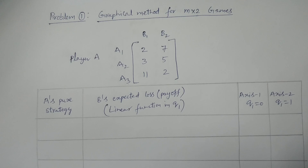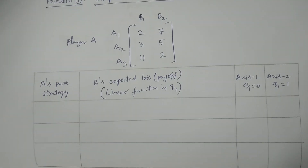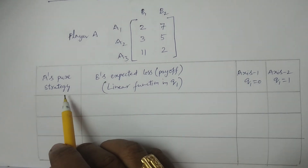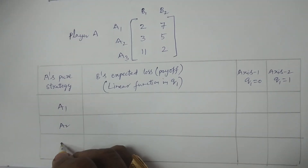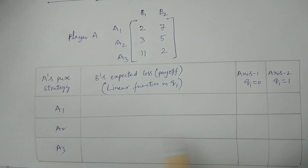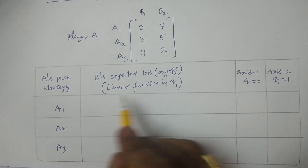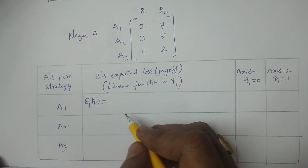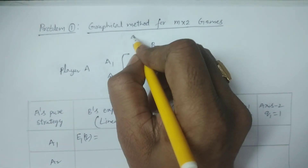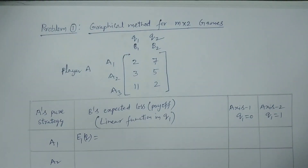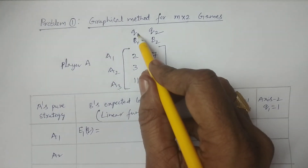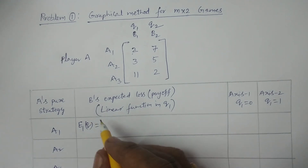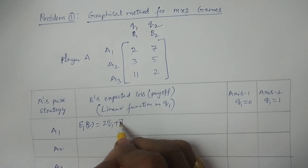In the graphical method, the first step is to prepare this particular table. We consider A's pure strategies A1, A2, and A3 — three strategies — and calculate B's expected loss as a linear function in q1. For strategy A1, B's expected loss E1(q) equals 2q1 plus 7q2. With probabilities q1 and q2, multiplying 2 by q1 and 7 by q2 and adding gives the expected payoff or loss for player B.